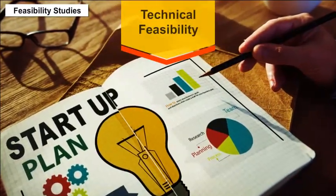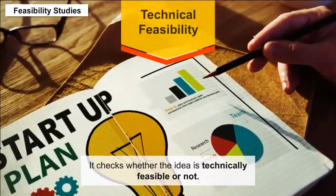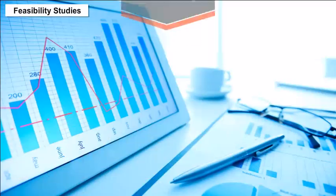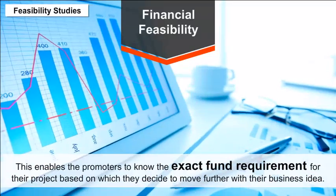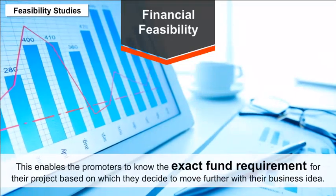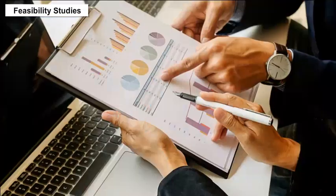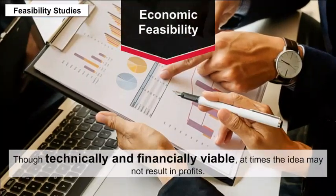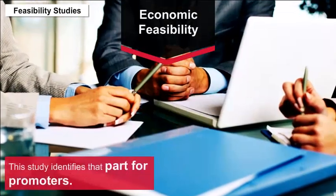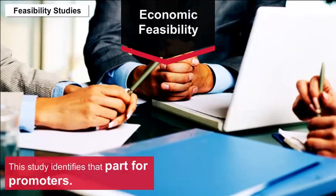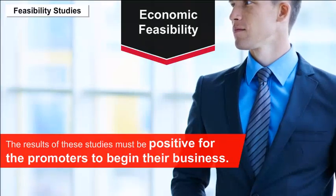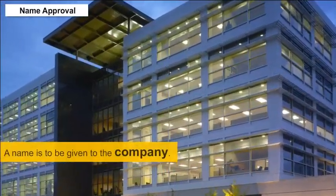The feasibility studies include: A. Technical feasibility — it checks whether the idea is technically feasible, looking for technology or raw material availability. B. Financial feasibility — this enables promoters to know the exact fund requirement for their project, based on which they decide to move forward. C. Economic feasibility — though technically and financially viable, at times the idea may not result in profits; this study identifies that. The results of these studies must be positive for the promoters to begin their business.